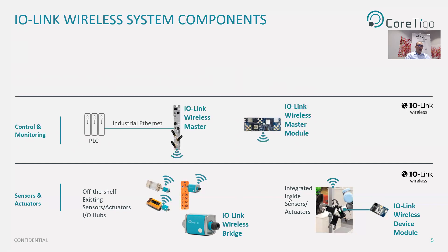Moving up, we can see the IO-Link Wireless masters, which enable the communication between the devices and the PLC at the OT level — for example, via industrial Ethernet communication such as EtherNet/IP or PROFINET — but also to any enterprise and cloud applications at the IT level, for example via MQTT or OPC UA. The master is an off-the-shelf IP67 device, with an industrial Ethernet interface and the ability to communicate with up to 40 IO-Link Wireless devices per standard specification.